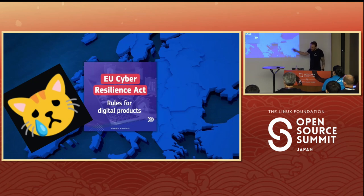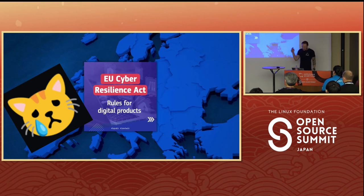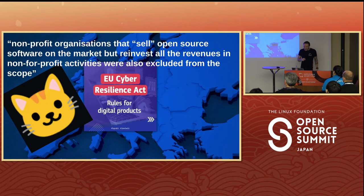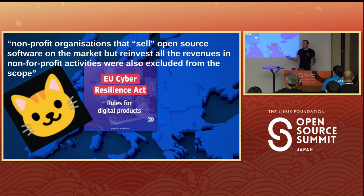Sadly, we were unable to stop the CRA, which achieved political approval as of December 1st between the European Parliament and the European Council and now goes into a process to become law. However, according to early reports, the draft states that non-profit organizations that sell open source software on the market and reinvest all revenues in not-for-profit activities were excluded from scope. This seems like a very good thing — possibly the greatest victory for open source in Europe in the last few years. It remains to be seen when the draft is published whether lobbying and pressure from the open source community made that massive change to the legislation's wording.